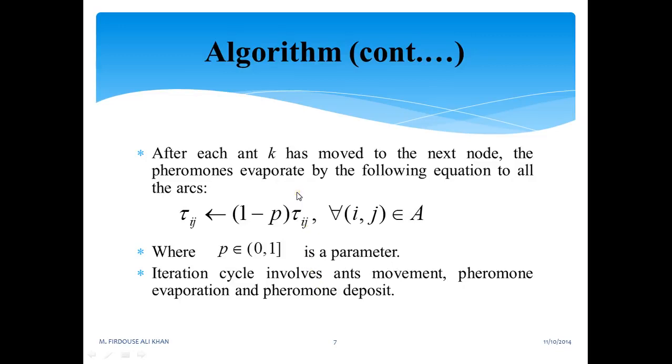The pheromone evaporates by the following equation. This equation represents the evaporation of the pheromone. The iteration cycle involves ant movement, pheromone evaporation, and pheromone deposit. This is a cyclic process which keeps happening when ants go to the food and come back from the food to the nest. Pheromone evaporates over time unless reinforced by more and more ants.